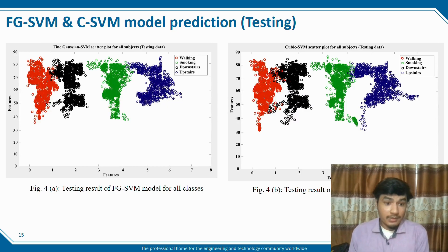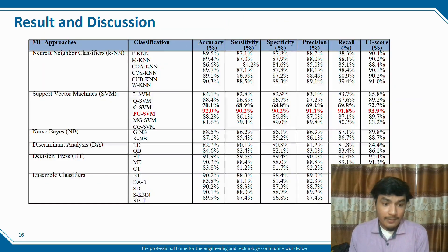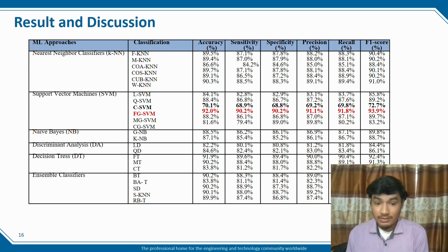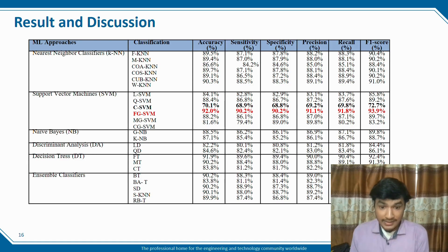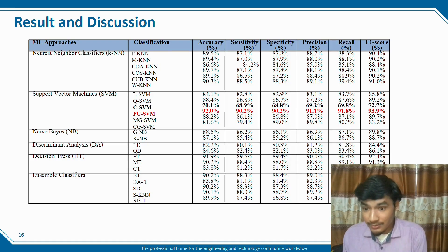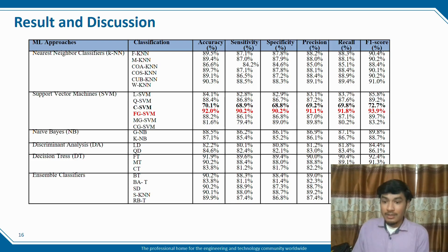For the result and discussion, we used multiple classifiers: Nearest Neighbor (KNN), Support Vector Machine (SVM), Naive Bayes (NB), Discriminant Analysis (DA), Decision Tree (DT), and ensemble classifiers. CHBM achieves 70.1% accuracy and 72.7% F1 score, while FGSBM achieves 92.0% accuracy and 93.9% F1 score. CHBM has the lowest accuracy and F1 score, and FGSBM has the highest accuracy and F1 score.